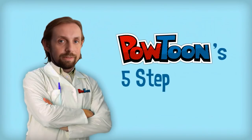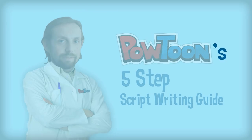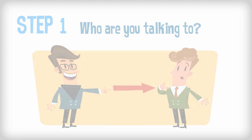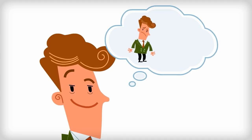Introducing Powtoon's five-step script writing guide. Let's run through the basic steps real quick. Number one: make it clear who you're talking to at the opening of your script. What specific audience are you addressing? When you're writing a script, you should be looking to enter into the conversation in your prospect's mind, and that means knowing the main concerns and questions that they're already processing.